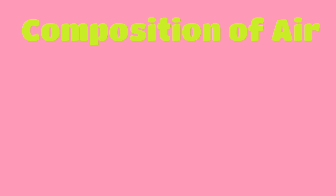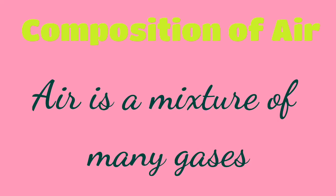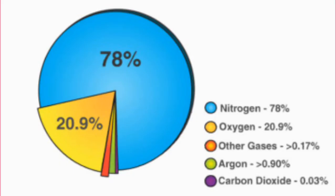Next is the composition of air. Air is a mixture of many gases. Usmein 78% nitrogen hota hai, 21% oxygen, and 1% other gases like neon, argon, carbon dioxide, and ozone are present in air. It also contains water vapors and dust particles.